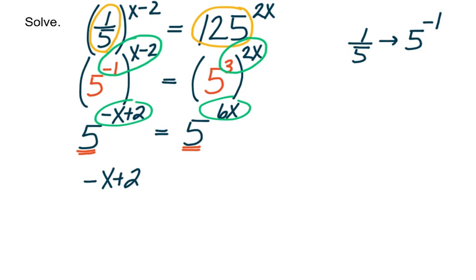And the equation is no longer exponential, now it is linear. So I can just add x to both sides and then divide by 7.